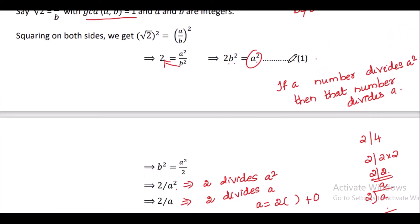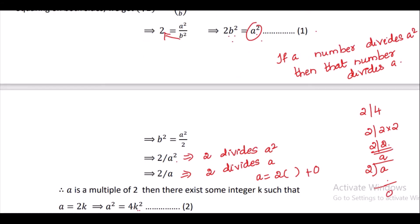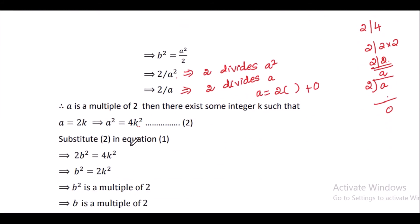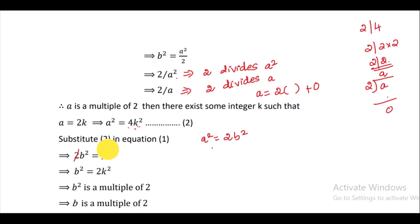From equation 1 we have 2b squared equals a squared, and from equation 2 we have a squared equals 4k squared. Substituting: 2b squared equals 4k squared. Cancelling the 2 from both sides gives b squared equals 2k squared. Therefore, b squared is also a multiple of 2.